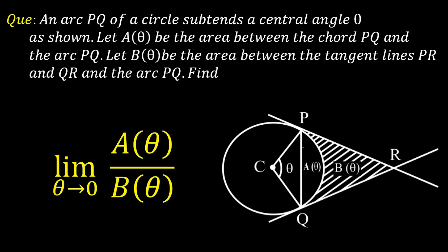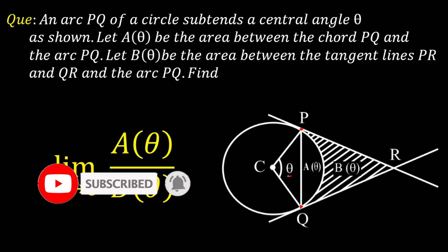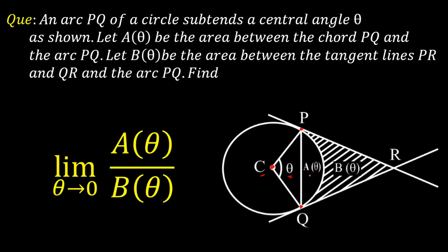Hello everyone. Today we're going to look at a nice problem from geometrical limits. If P and Q are two points on a circle, joining PQ gives a chord. This chord subtends an angle theta at the center C. A(θ) is the area bounded by the arc and chord PQ, while B(θ) is the area bounded by the tangents drawn from P and Q — those tangents meet at point R — and the arc PQ. We need to find the limit as theta tends to zero of A(θ)/B(θ).